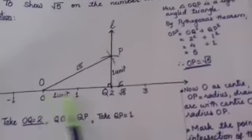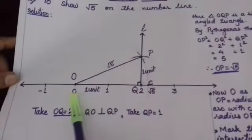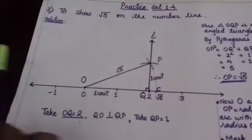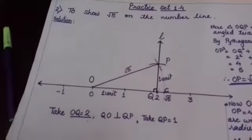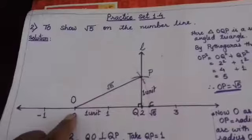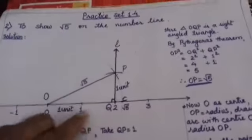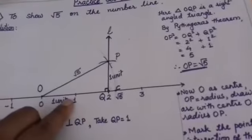First you will draw a number line: 0, 1, 2 and 3. Now, here 0 to 1 we have taken 1 unit distance and also 1 to 2 is 1 unit. In this way, 0 to Q point we have taken 2 distance, that means 2 units.